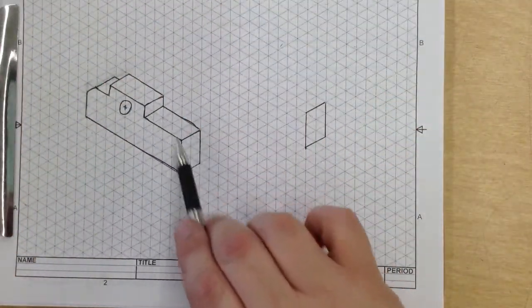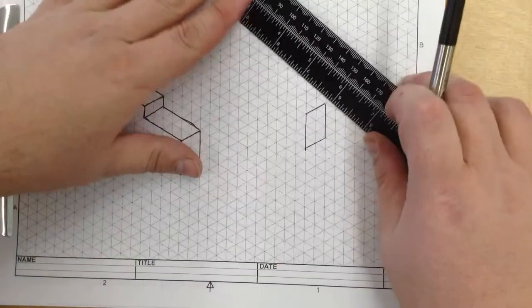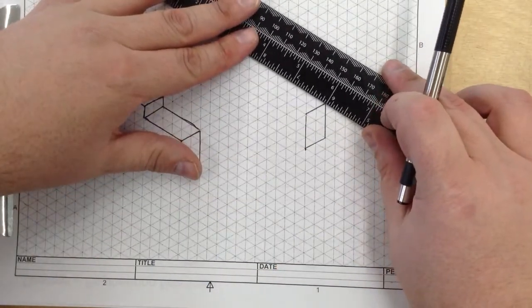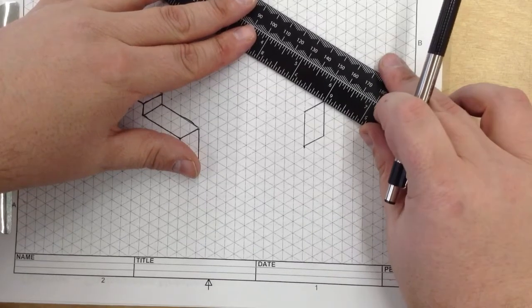Now next, the drawing goes one inch in. So, lining up my ruler, I'm going to take it one inch in.